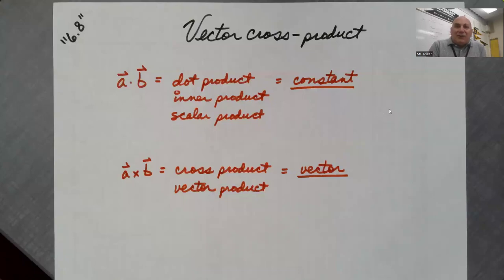Hello pre-calculus students. There is no section 6.8 in our textbook, but we covered the dot product in section 6.7, so we're going to do a 6.8, which is the vector cross product.